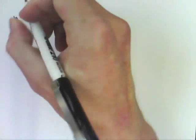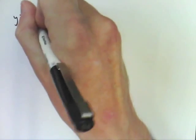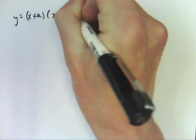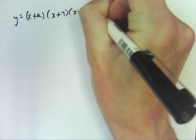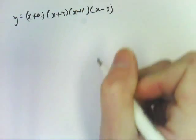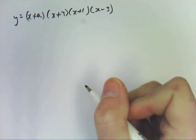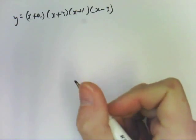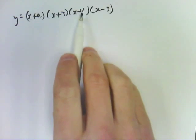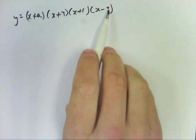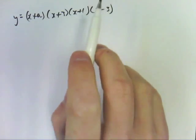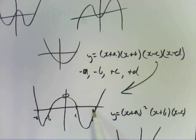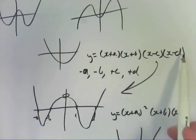So this is in 3i. We've got the question y equals x plus a, x plus 3, x plus 1, x minus 3. And it's quite easy if you think about this quite logically, and it says four distinct x-intercepts, which means that a is not 3 or 1 or negative 3.